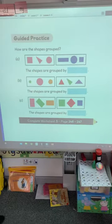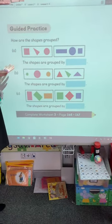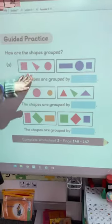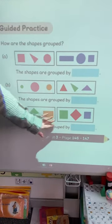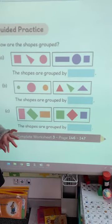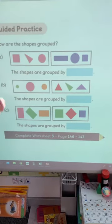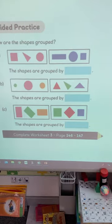And then we get to the guided practice. So it says, how are these shapes grouped? So these, how are they put together? Is it shape or colour? Shape or colour? Shape or colour? And write it in these boxes. Don't write it in these boxes. It's in your textbook. Just have a go at answering the questions, but don't write them.